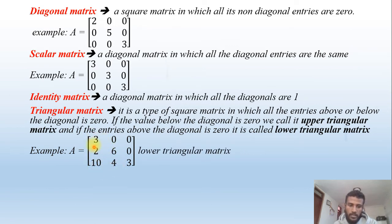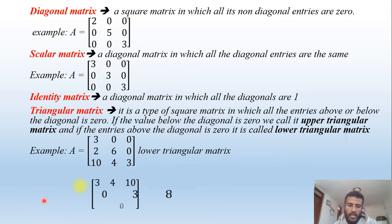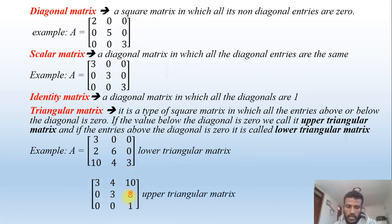For example, in this triangular matrix, above the diagonal all values are zero, so it is called a lower triangular matrix. Whereas in this other matrix, values like 3, 4, 10, 3, 8, 1 appear above the diagonal but below the diagonal all values are zero, which is called an upper triangular matrix.